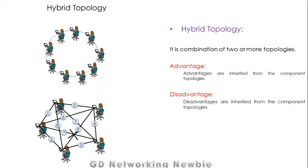Finally, we have hybrid topology. In hybrid topology, two or more topologies are combined together. For example, a ring topology and a mesh topology can be joined with a connection to form a hybrid topology. The advantages and disadvantages are inherited from the component topologies — whatever advantages or disadvantages the combined topologies have, those will carry over into the hybrid topology as well.